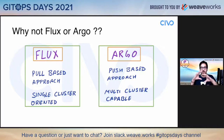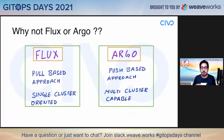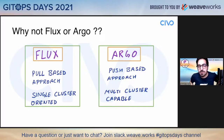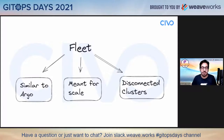The first question that comes to mind is: why create something new when Flux and Argo are already there doing good work in the GitOps field? From Rancher's point of view, Flux is a pull-based approach where you give a path to monitor in your Git repository — it's more of a single-cluster-oriented model. Argo, on the other hand, is a push-based approach and is multi-cluster capable, but it doesn't scale to the level needed for k3s at edge, where you may be running thousands of clusters. Fleet is similar to Argo in initial grounds, but is built for scale and also supports disconnected clusters.